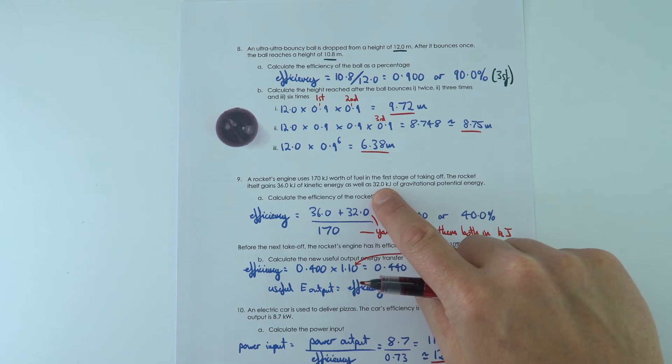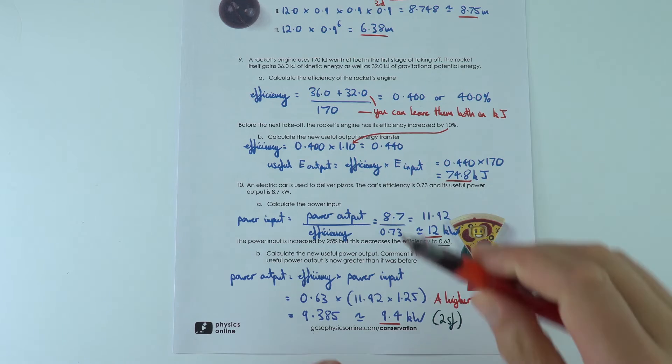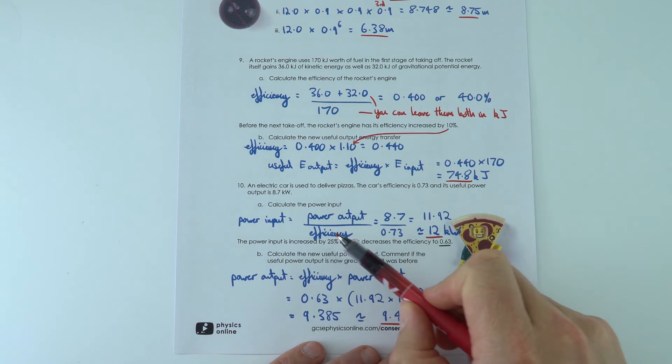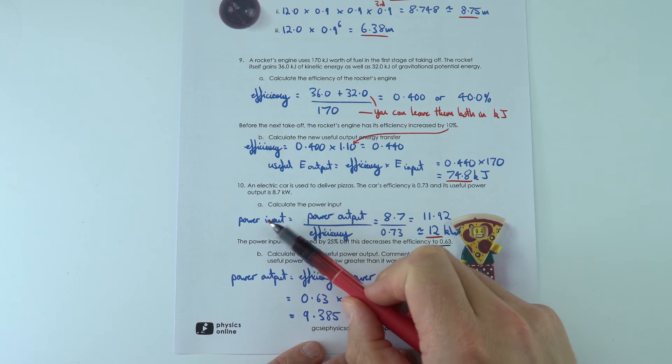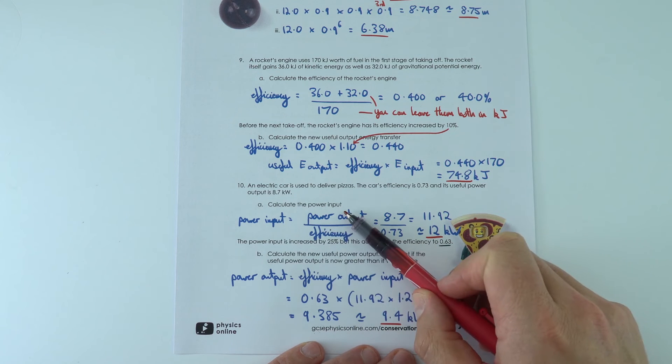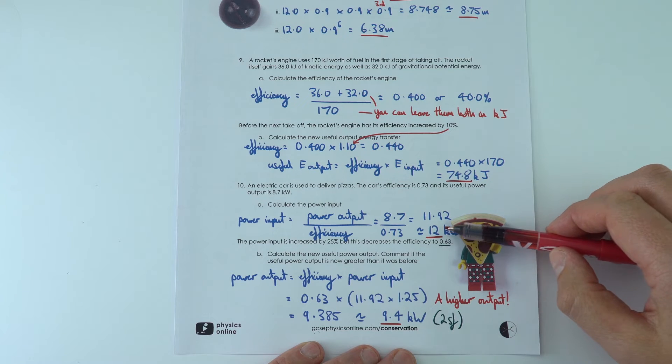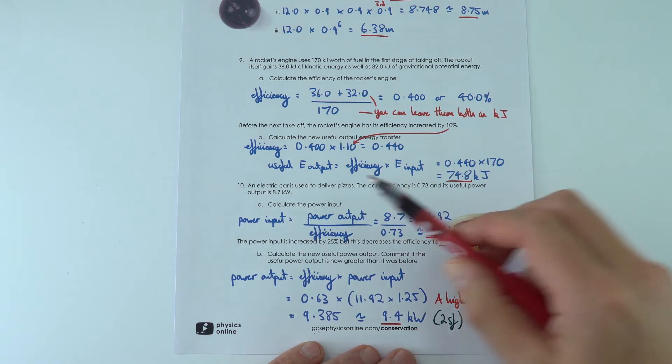That increases to 44% efficiency which would then give a value of 74.8 kilojoules, and I've left this to three significant figures like the values over here. And then the final one is looking at the ratio of powers to look at the efficiency. And I've just rearranged the equation to say that the power input equals the power output divided by the efficiency.